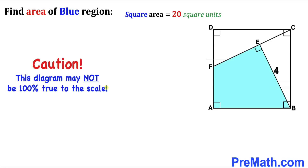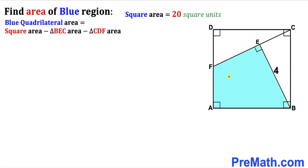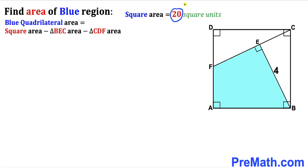Please keep in mind that this figure may not be 100 percent true to scale. The area of this blue shaded quadrilateral equals the area of square ABCD minus the area of triangle BEC and minus the area of triangle CDF. We know the area of square ABCD is 20 square units, so we are going to calculate the area of triangle BEC and triangle CDF as well.